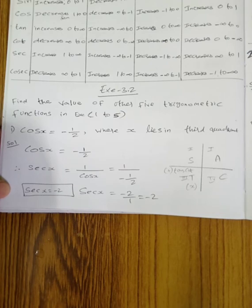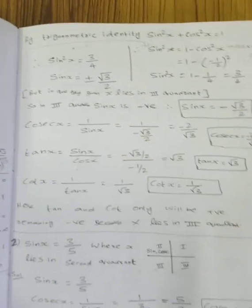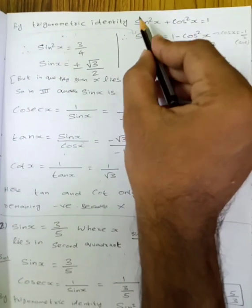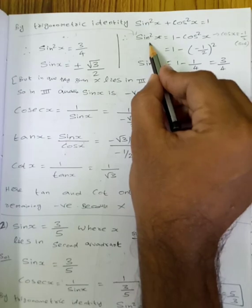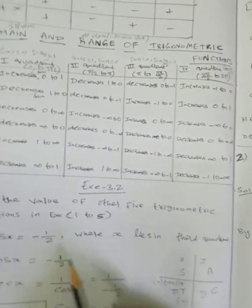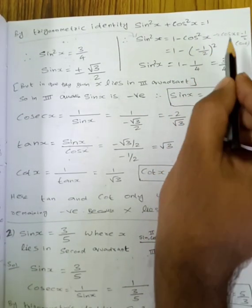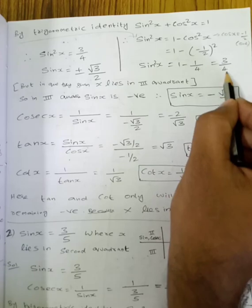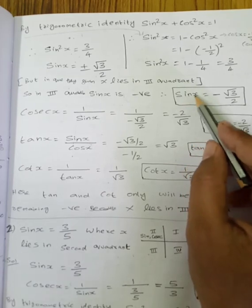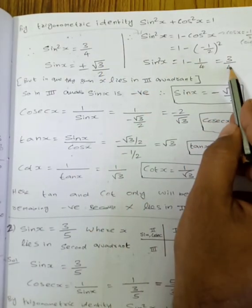Remaining everything is negative. To find sin: using the trigonometric identity sin²x plus cos²x equals 1, so sin²x equals 1 minus cos²x, equals 1 minus (minus 1 by 2)², equals 1 minus 1 by 4, equals 3 by 4. So sin x equals plus or minus root 3 by 2.